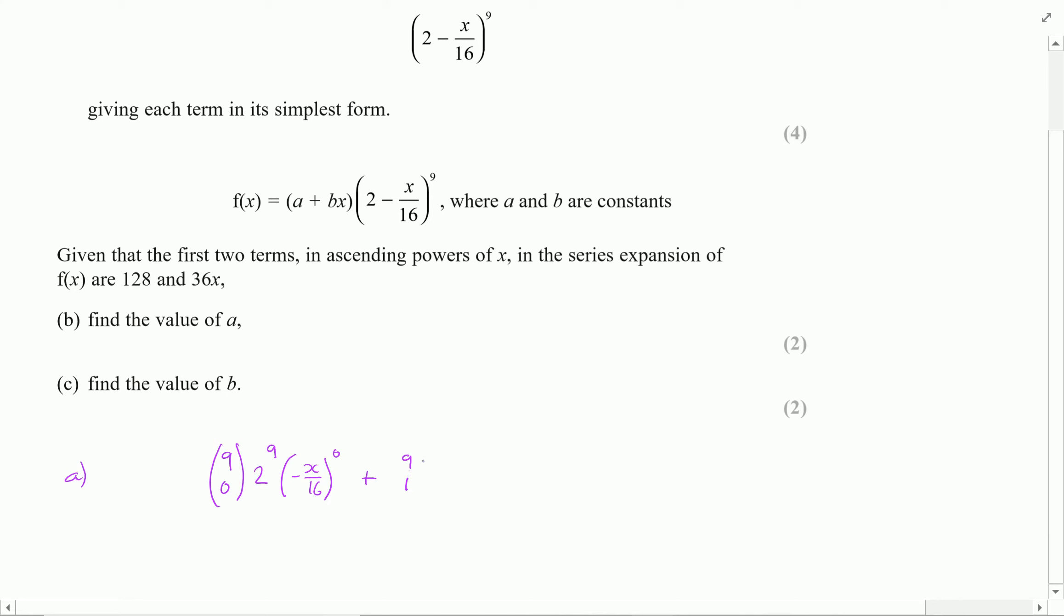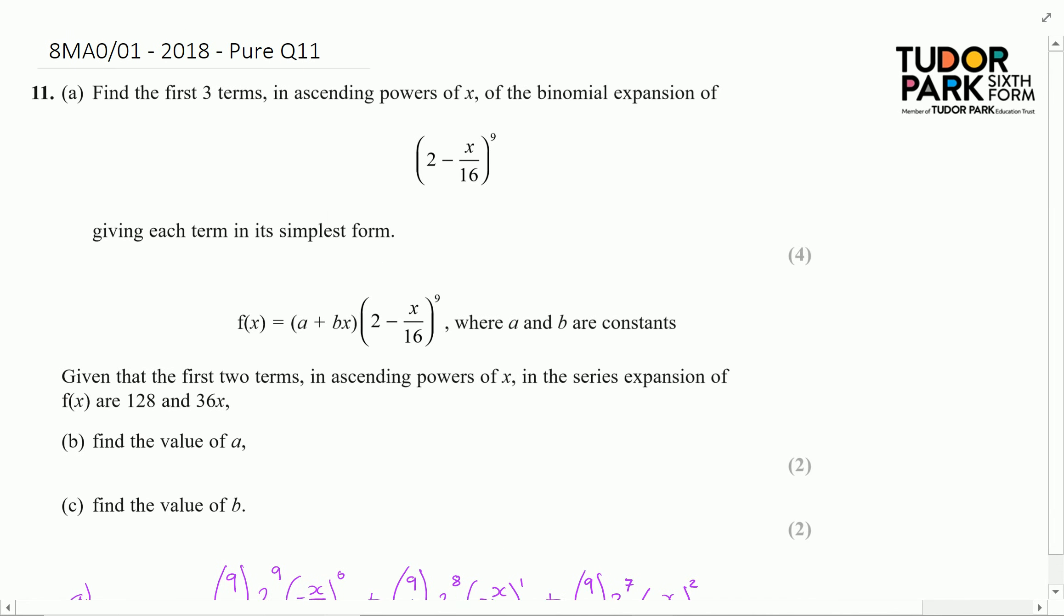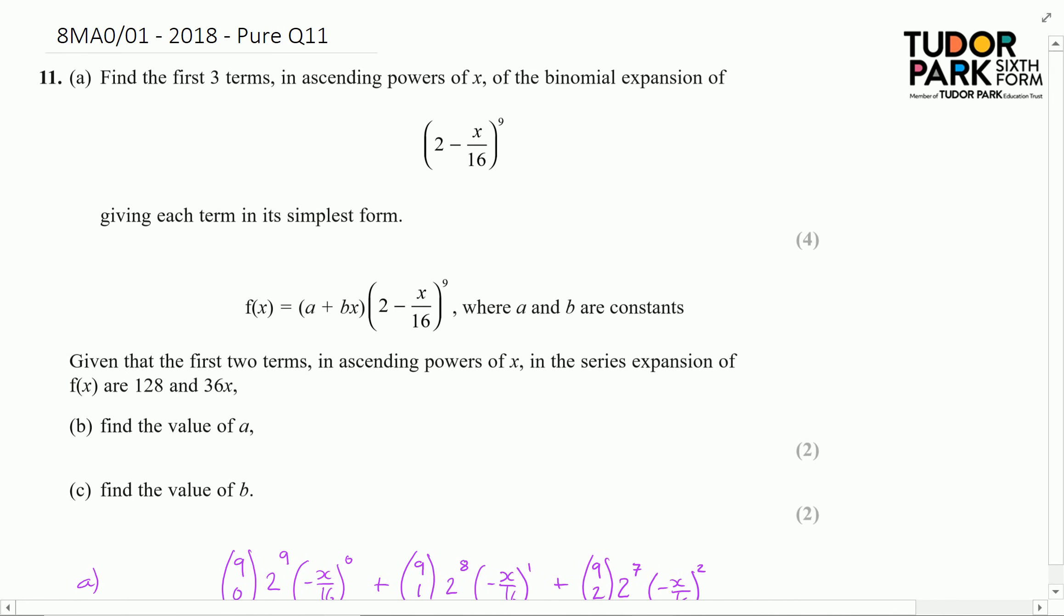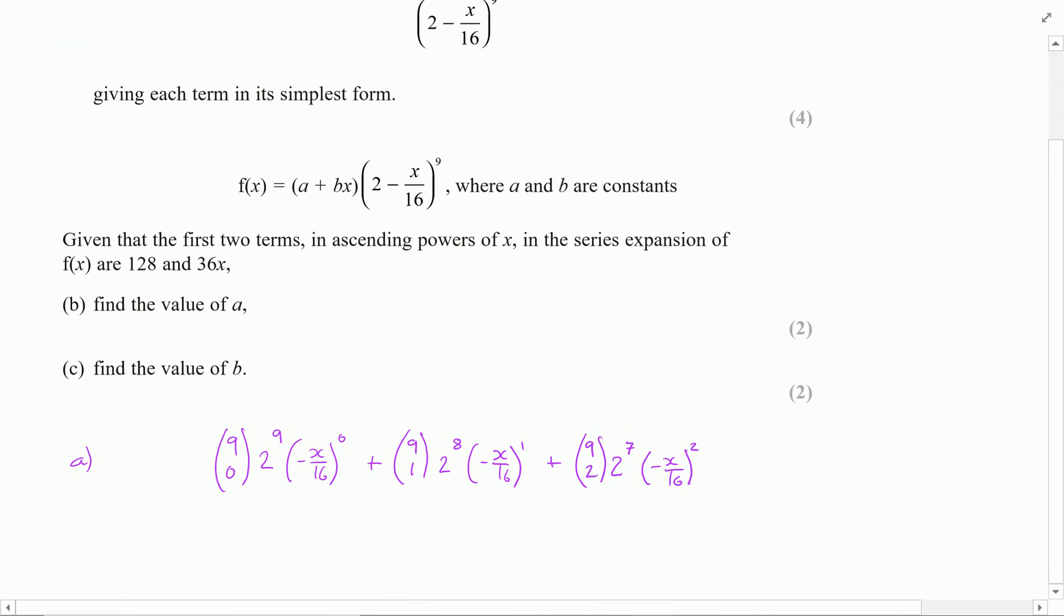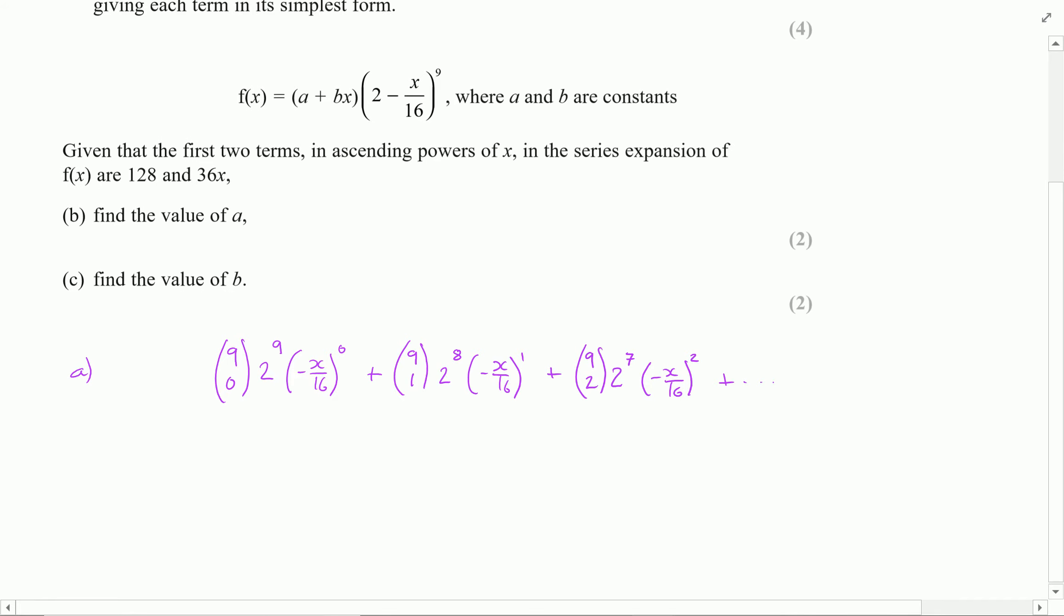The next one I'm going to write down is 9 choose 1, that's going to be then 2 to the power of 8 minus x over 16 to the power of 1, and then 9 choose 2, 2 to the power of 7 and minus x over 16 all to the power of 2. This is going to give me, in ascending powers of x, the first three terms. I know this will continue so I'm just going to write dot dot dot for completeness and move on down my page.